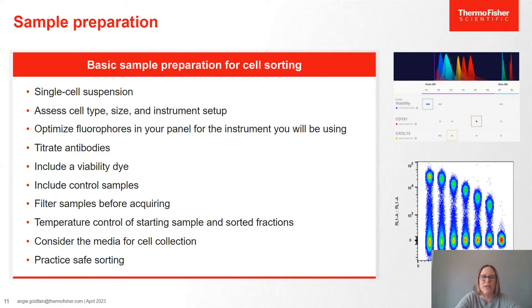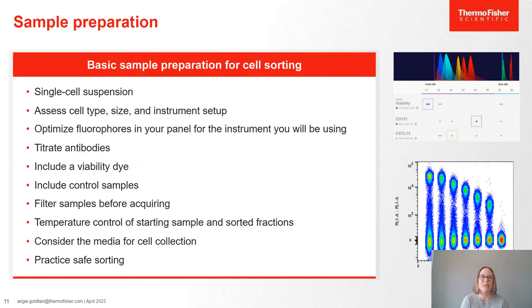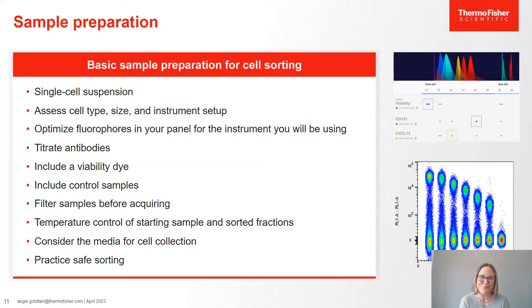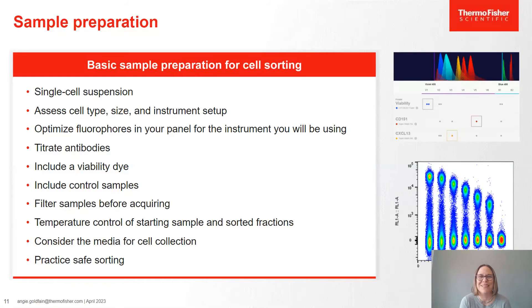Sample preparation is really key to cell sorting. No matter the instrument you're using, there are basic guidelines. Single cell suspension is really, really important — we're pushing the sample through a nozzle or small orifice, and clumps of cells will clog that orifice. Clogging is something we'd like to avoid as much as possible, so do as much as you can to achieve a single cell suspension. Always filter samples to remove any clumps or residual particles from the prep.